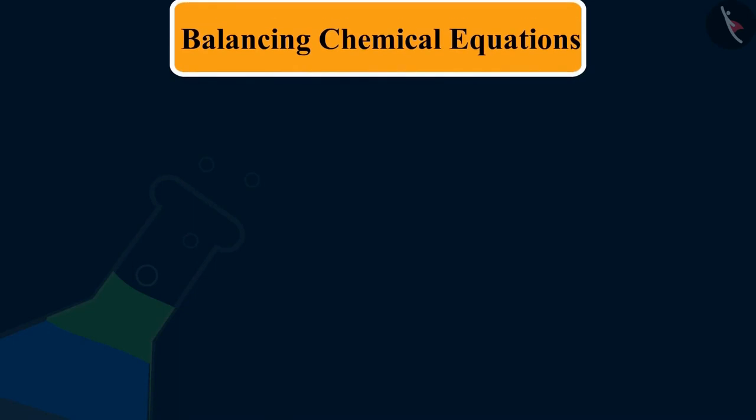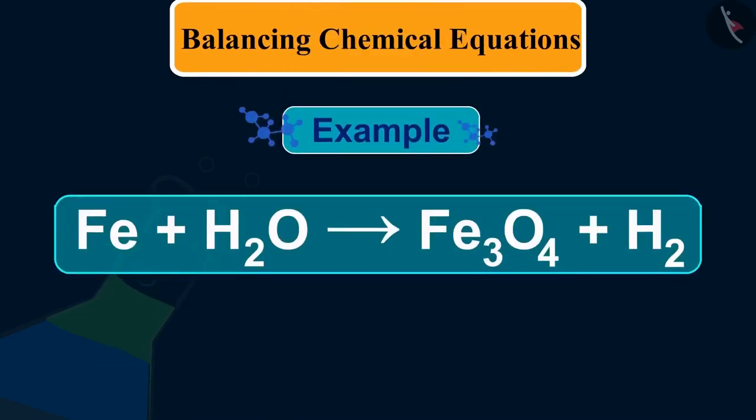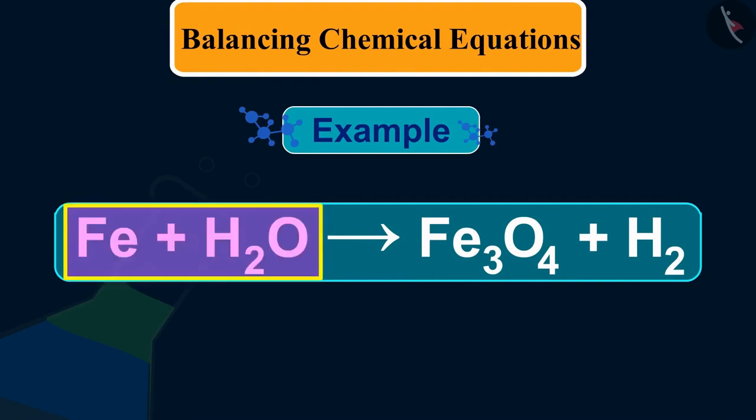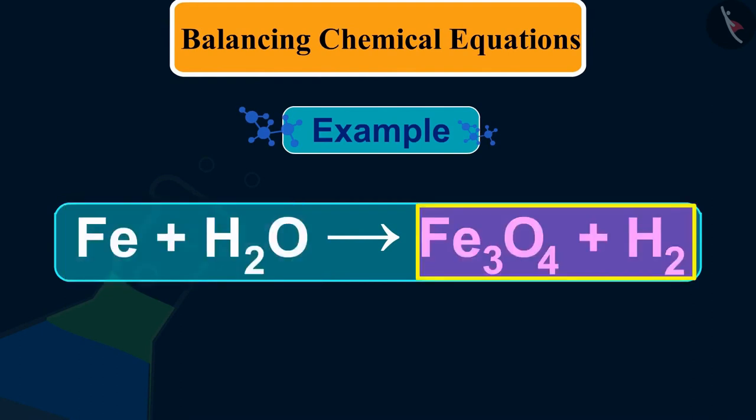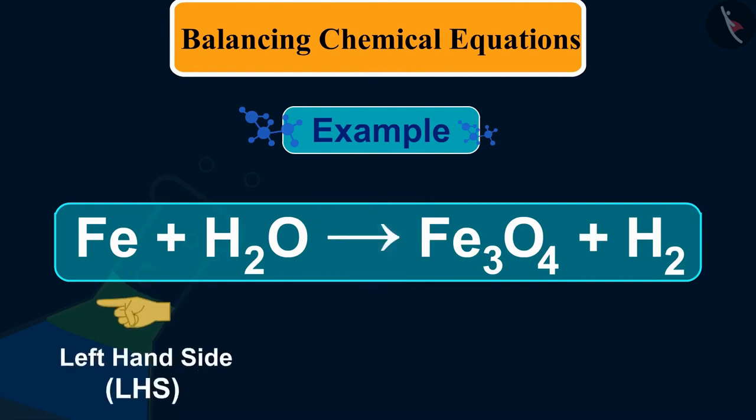Let us now try to understand balancing with the help of an example. Take the reaction of iron with water which produces iron oxide and hydrogen. Let us examine the number of atoms of different elements on both sides of the arrow.